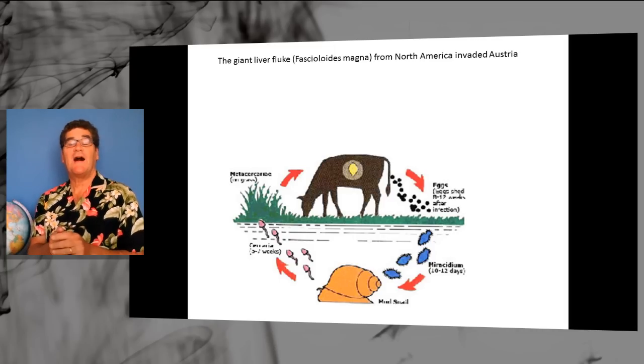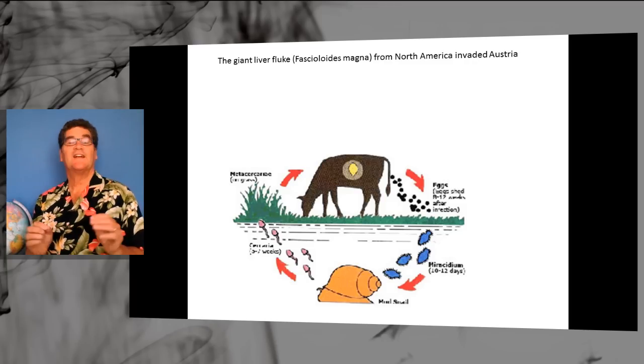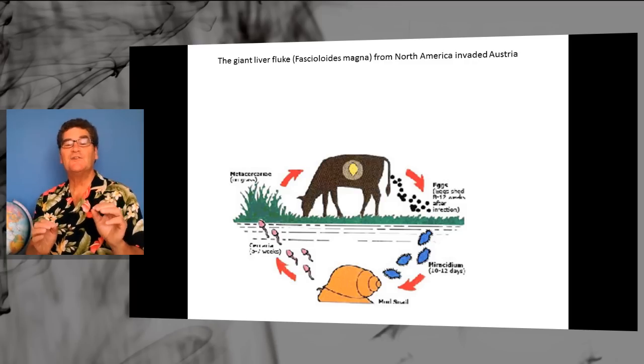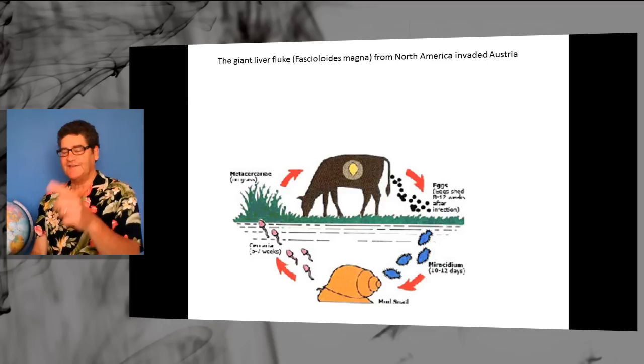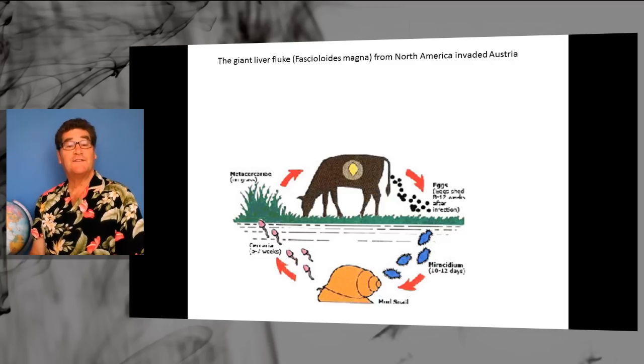They're ingested again by other snails who later send off tiny little flukes that swim, wiggle, to the tops of grasses where they can be eaten by the same cow or another cow that hasn't yet been infected. This is the life cycle of a fluke.